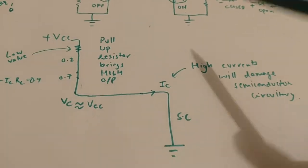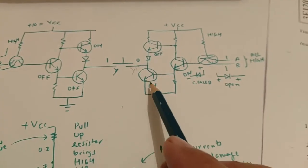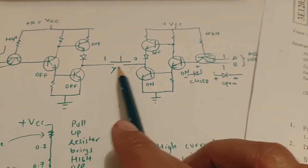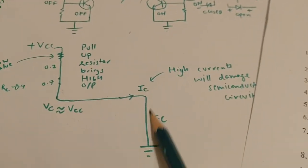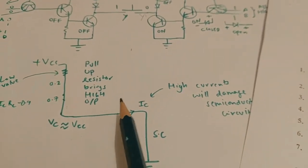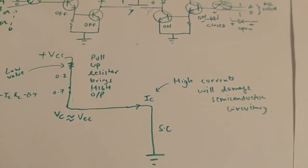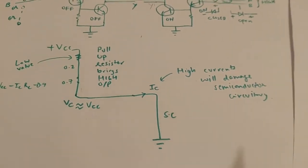Now this is high voltage here, which is written like this, and this transistor is on. So there will be a short path. This is on, short circuit. So when there is a short path, lot of high current will flow and this will damage the semiconductor circuitry.